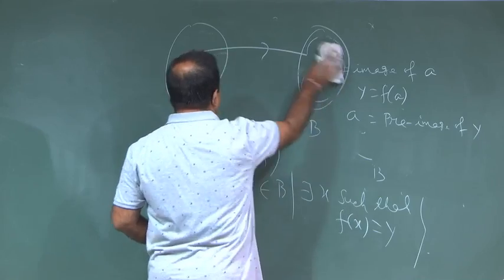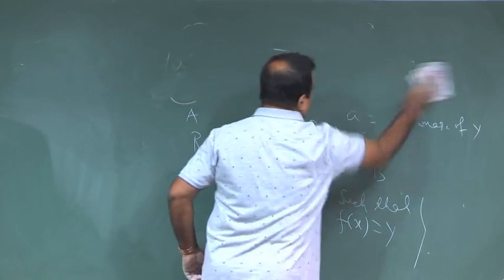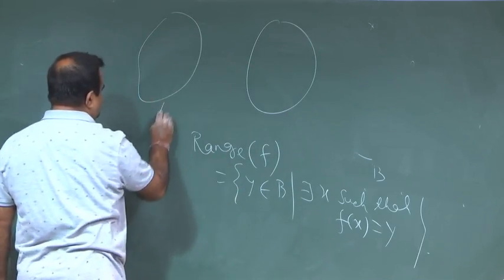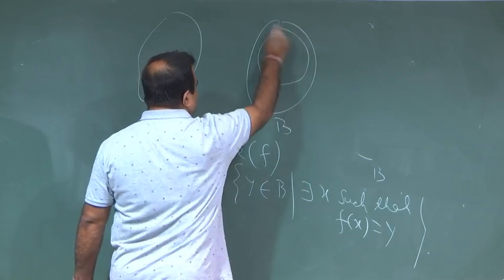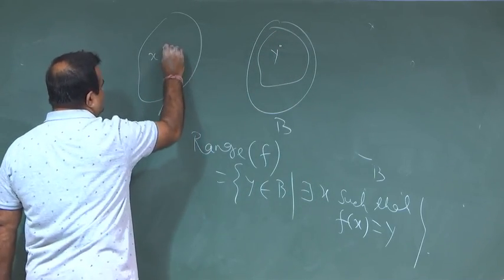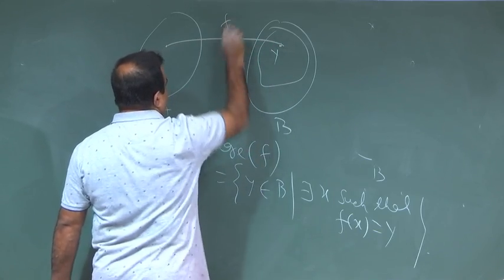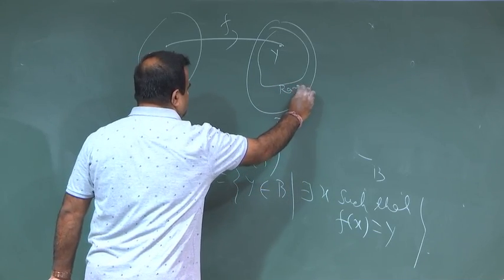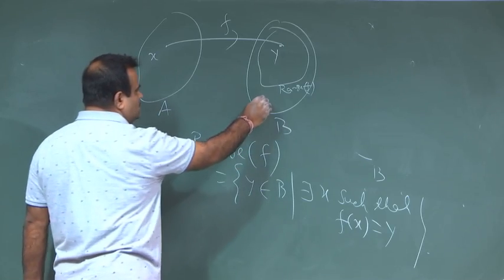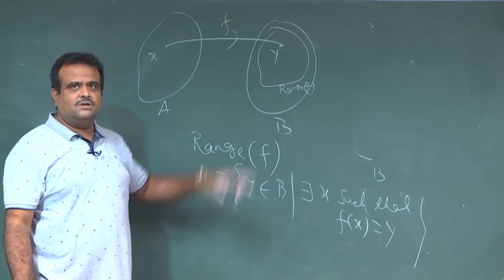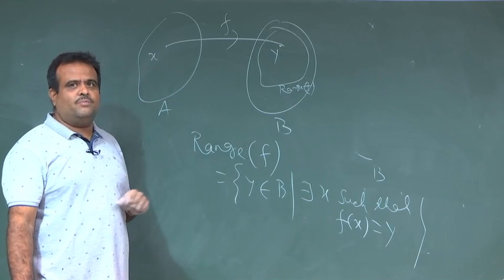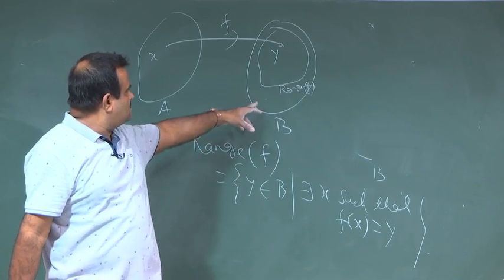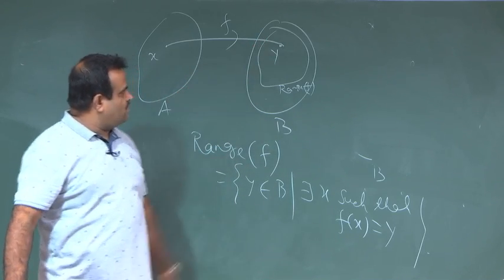The range is the set of all points y such that there is an x in the domain which maps to y. This is the range, and B is the codomain. If a point is outside the range, it means no point in the domain maps to it — it has no preimage. That is the range of f.